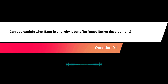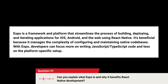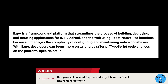Can you explain what Expo is and why it benefits React Native development? Expo is a framework and platform that streamlines the process of building, deploying, and iterating applications for iOS, Android, and the web using React Native. It's beneficial because it manages the complexity of configuring and maintaining native code bases. With Expo, developers can focus more on writing JavaScript and TypeScript code and less on platform-specific setup.